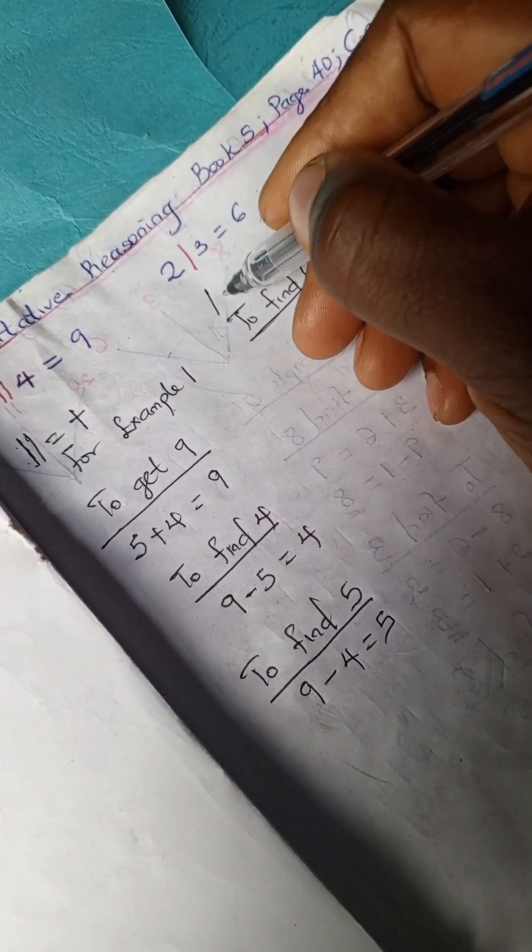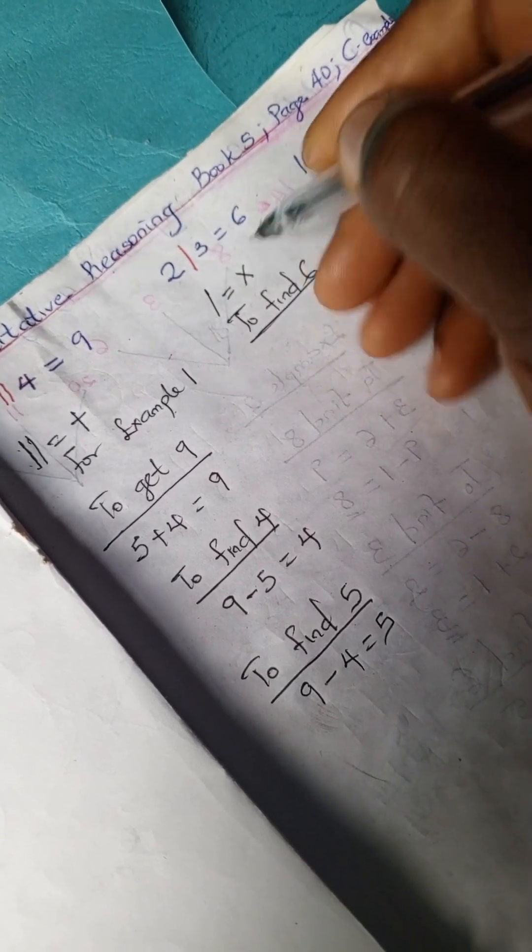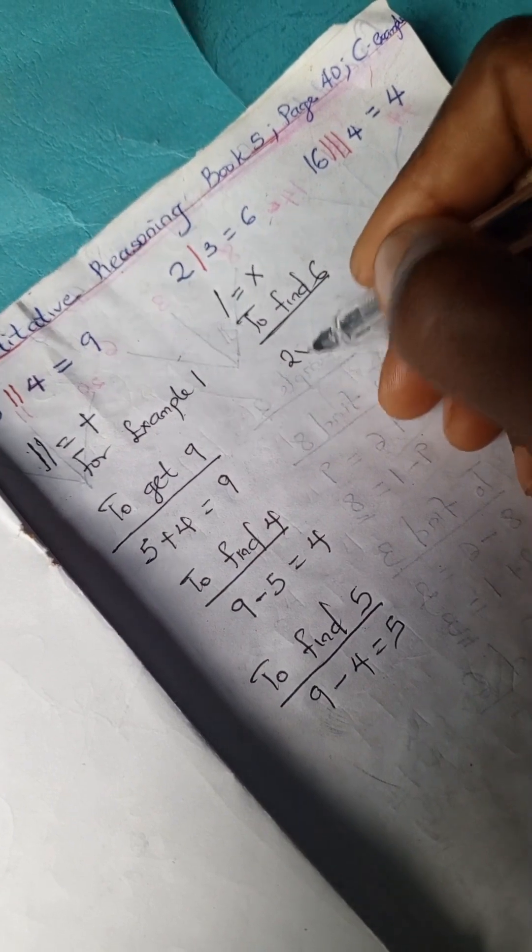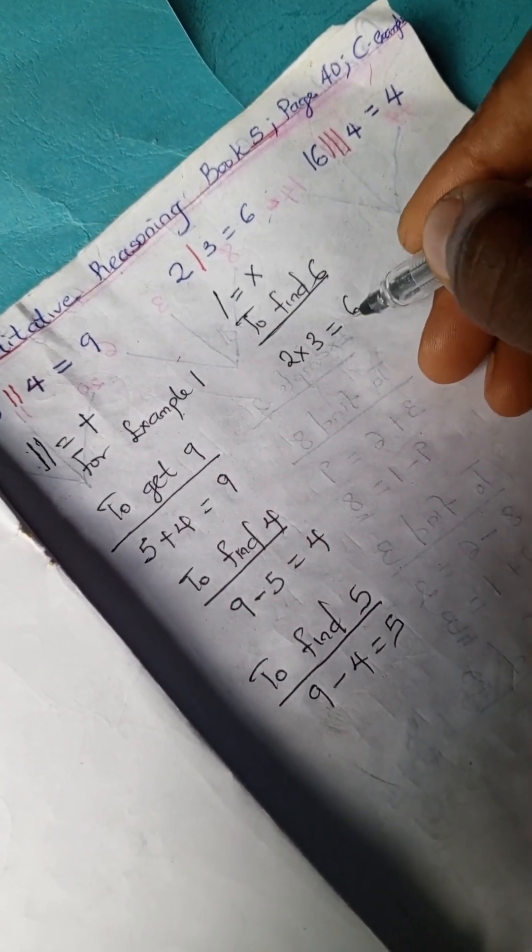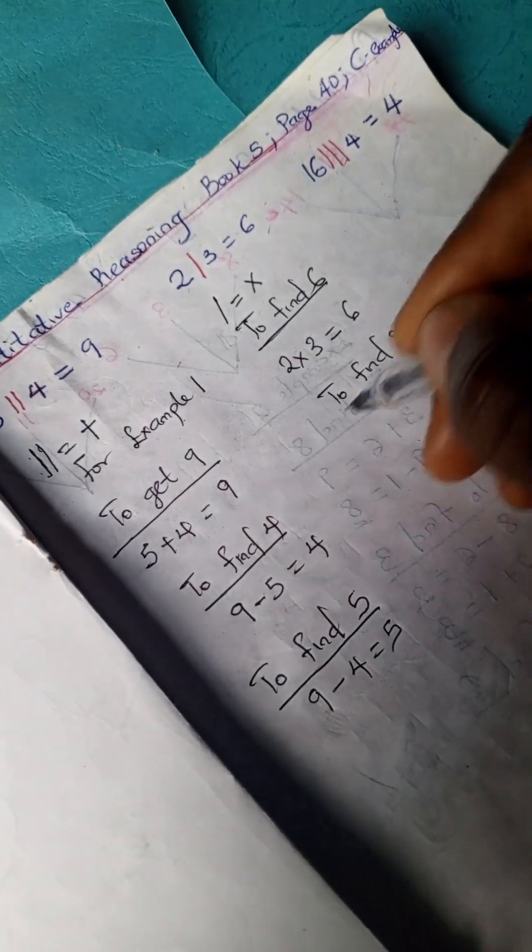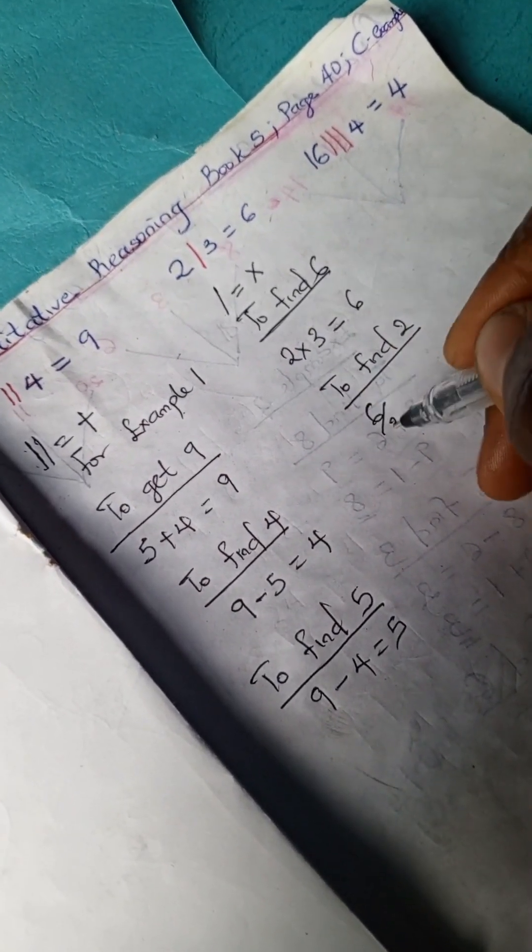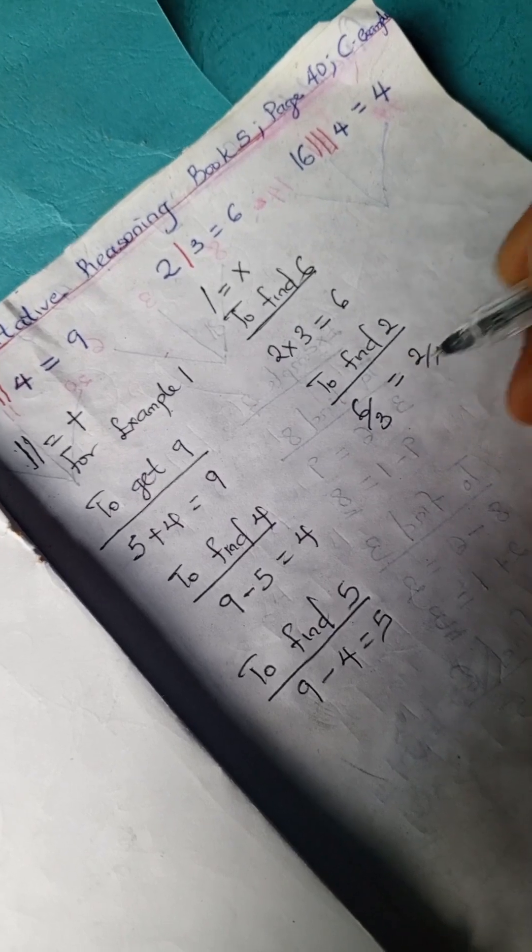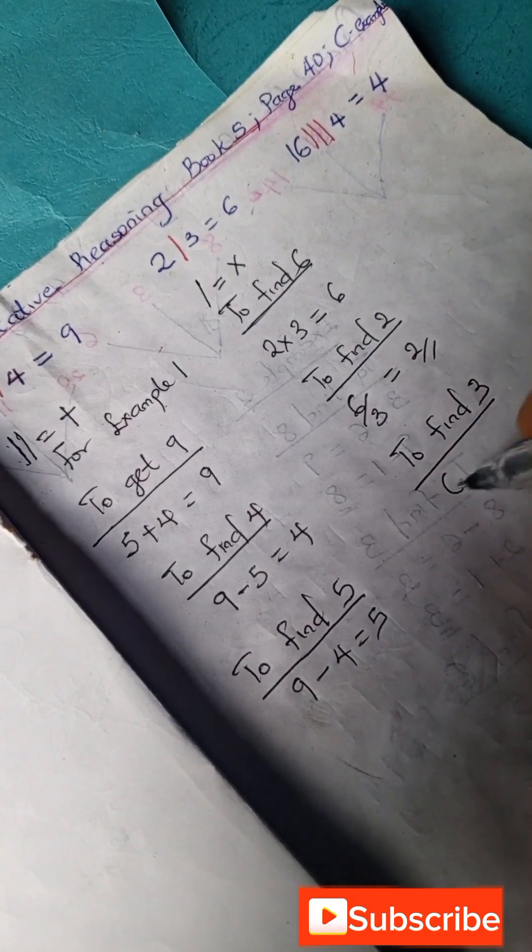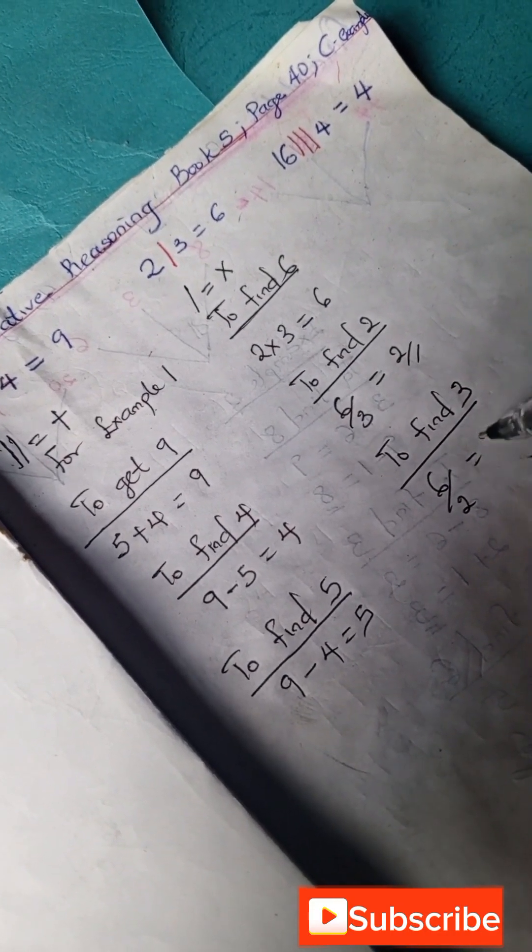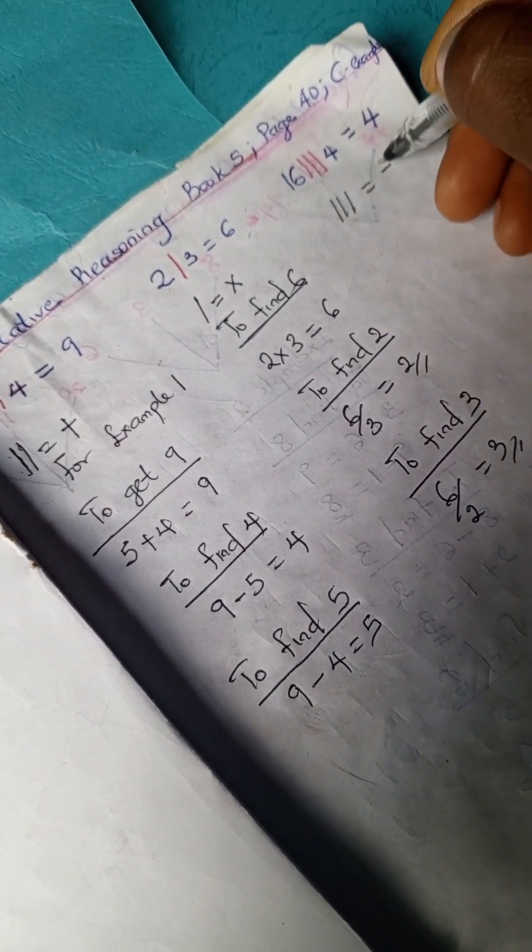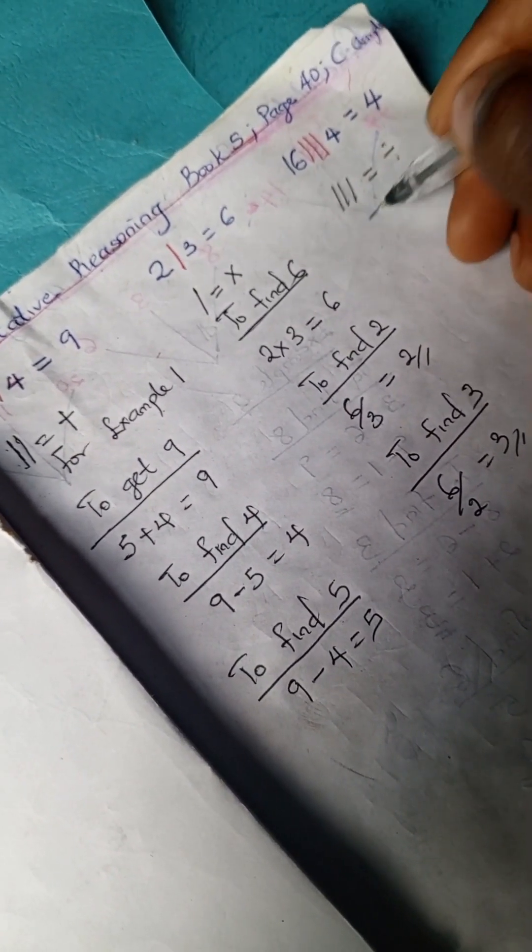Note that for a single stroke, it equals multiplication. So to find 6, we're going to say 2 times 3 equals 6. To find 2, we have 6 divided by 3 equals 2. And to find 3, we would have 6 divided by 2 equals 3. Now for every triple stroke, we divide.